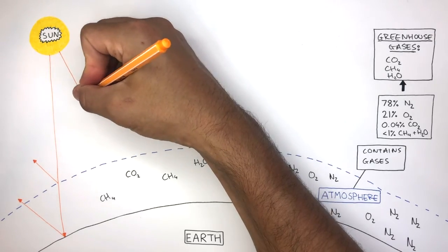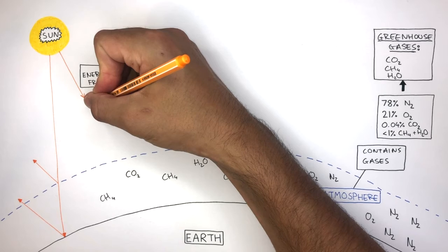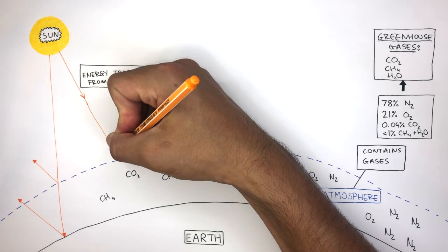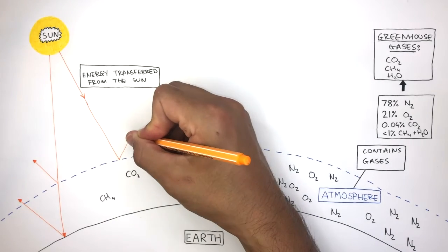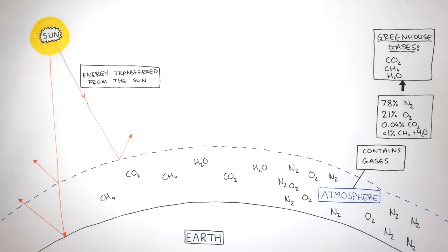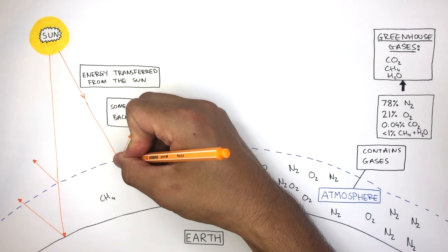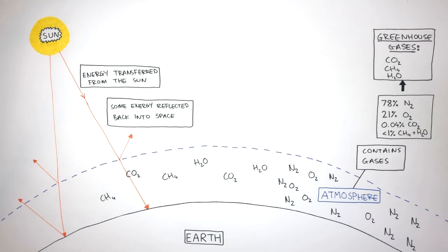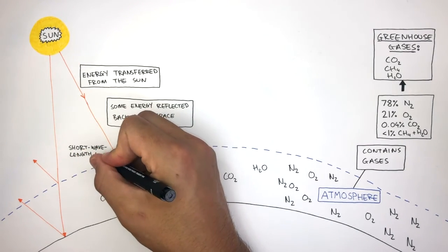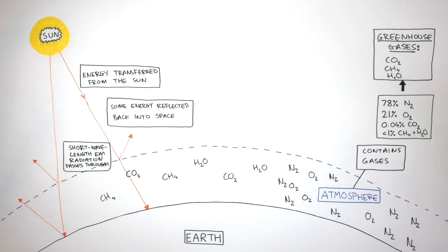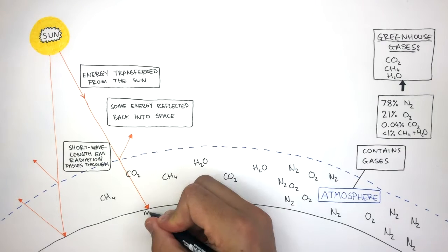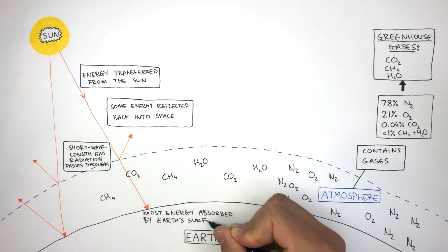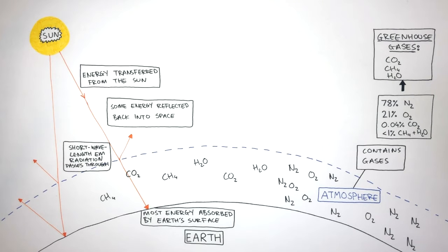This line represents how energy is transferred from the Sun in the form of electromagnetic radiation, where some of this energy is reflected back into space. The majority of the energy passes through Earth's atmosphere in the form of short wavelength electromagnetic radiation, which is absorbed by the Earth's surface causing it to warm up. Most of the energy is absorbed by the Earth's surface.